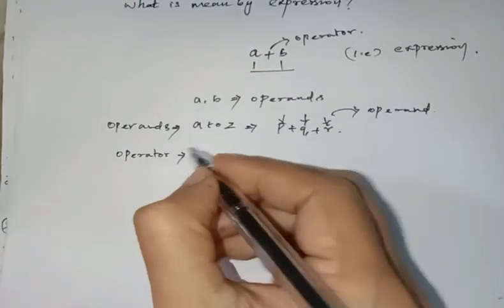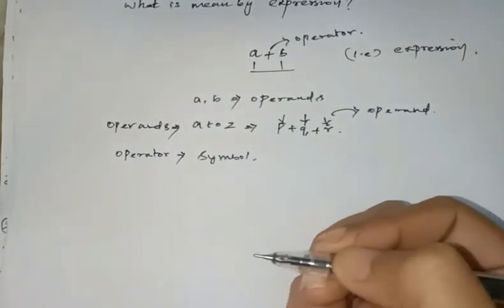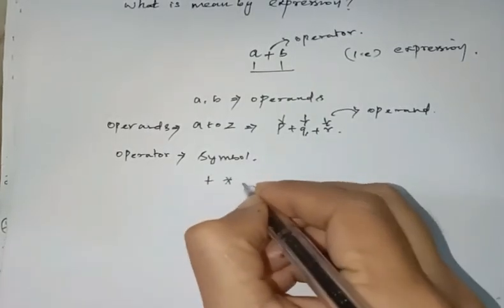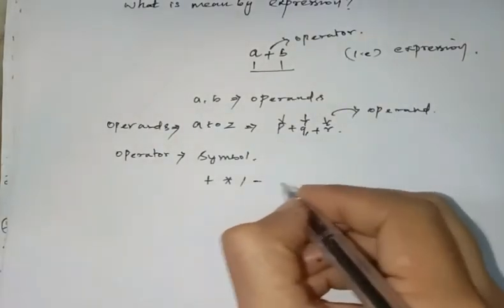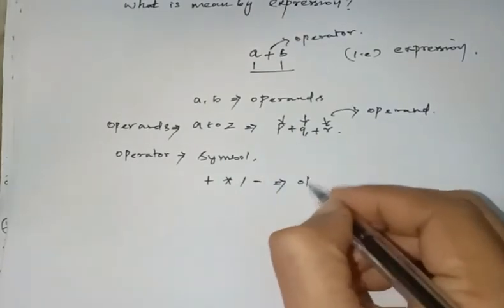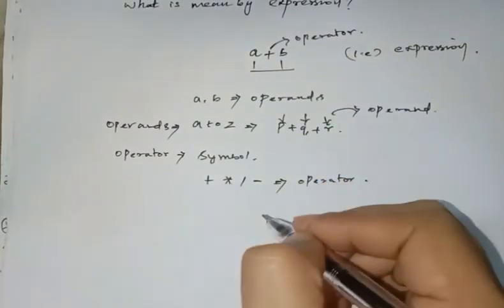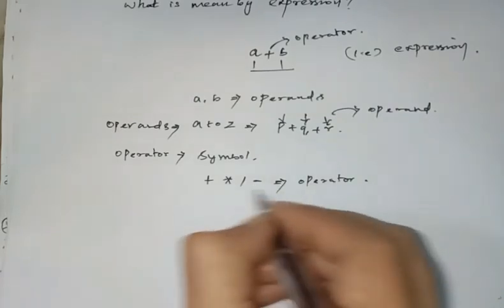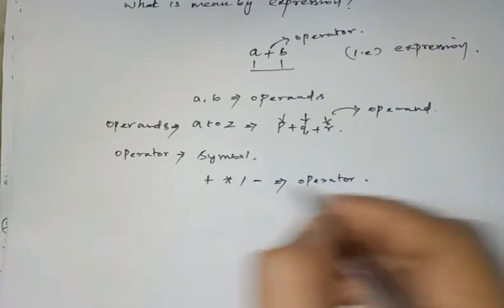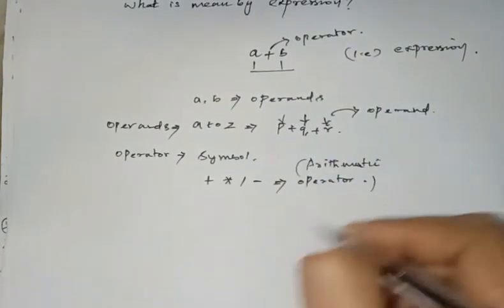Operators are nothing but symbols. What kind of symbols are we talking about? Addition, multiplication, division, subtraction — these kinds of symbols. We call this an operator. This operator uses symbols, and specifically we call them arithmetic operators.